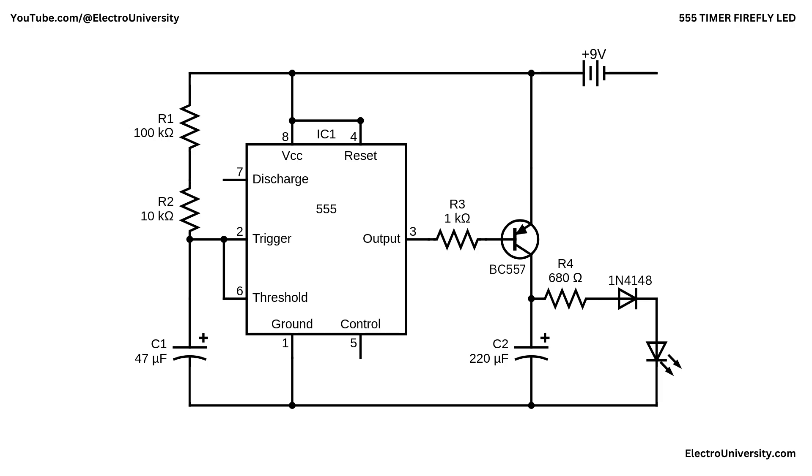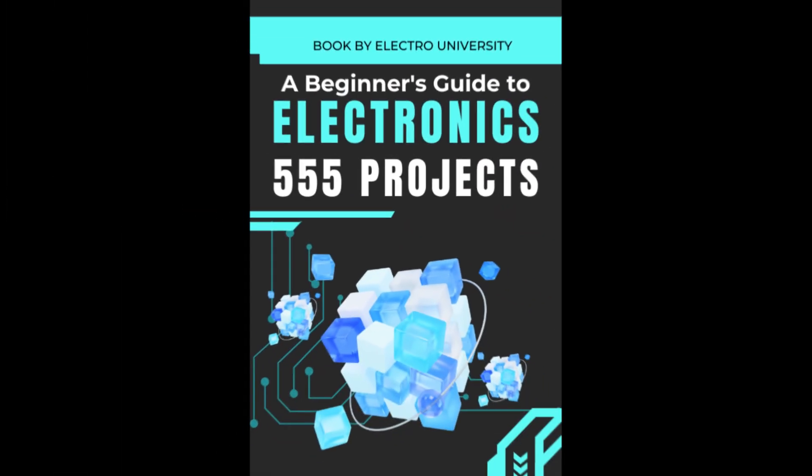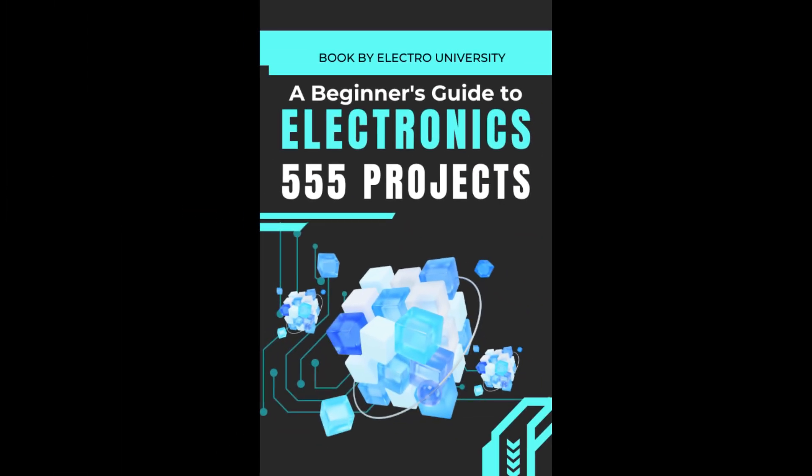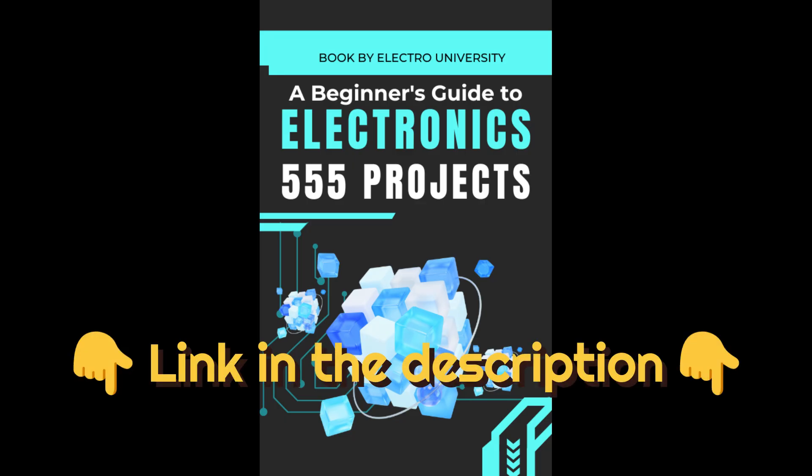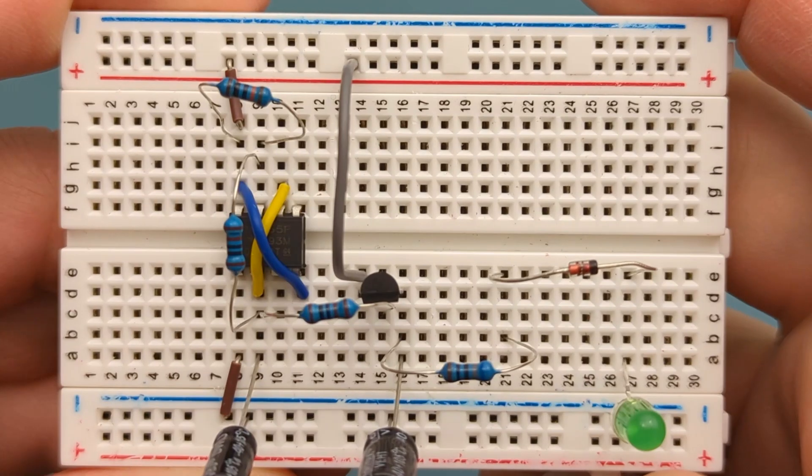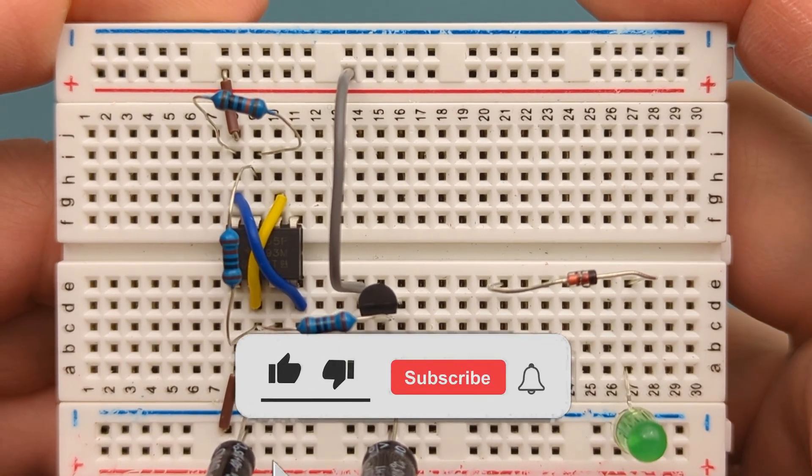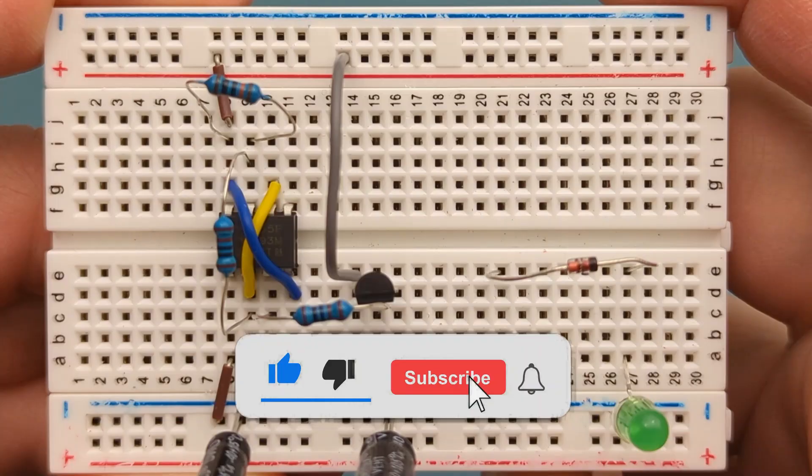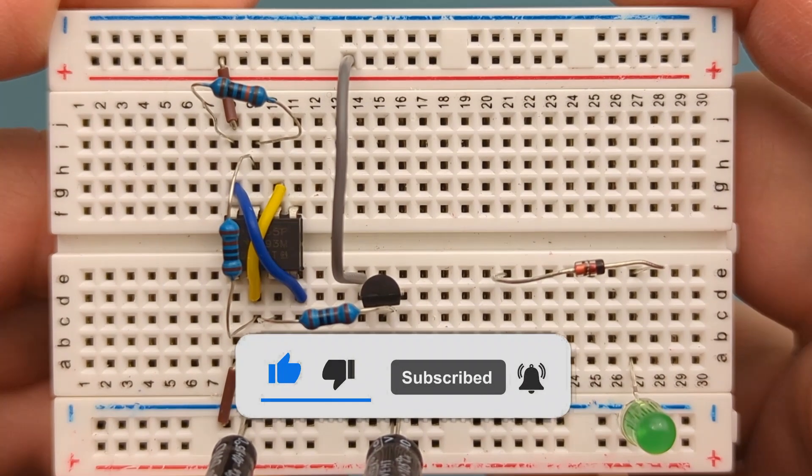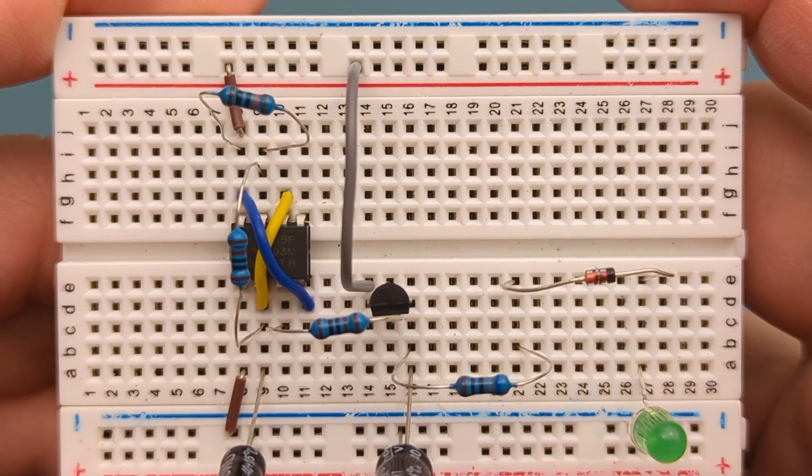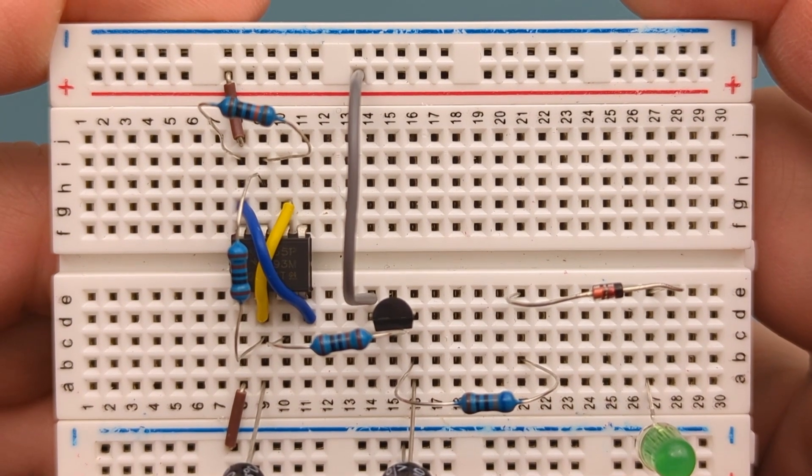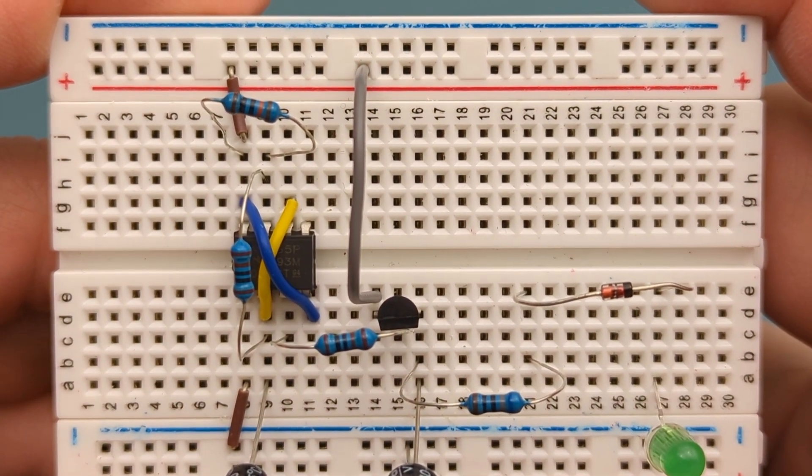I hope this video has shown you how to make a Firefly LED flasher with a 555 timer IC. Want to dive deeper into 555 timer projects? Grab my free ebook packed with awesome circuits and ideas. Just click the link in the description to download your copy now. If you found this video helpful, give it a thumbs up, consider subscribing for more electronics tips and tutorials, and hit the bell icon to never miss an update. Thanks for watching, and I'll see you in the next video.